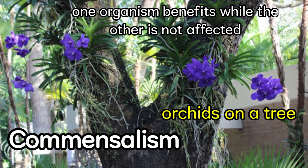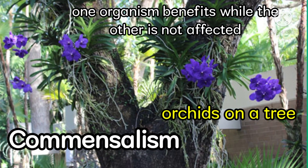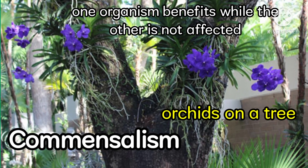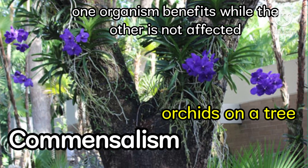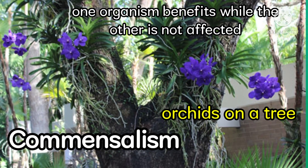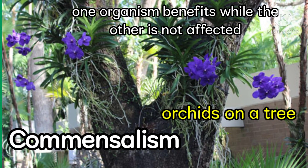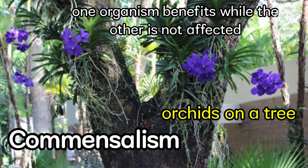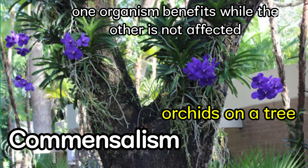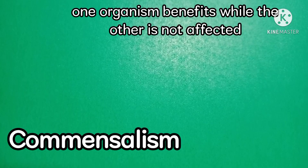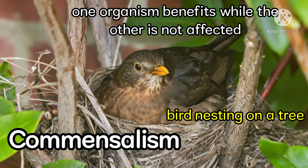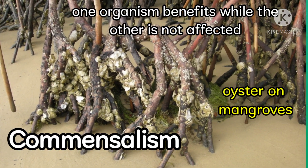Next is orchid on a tree. Orchids attach themselves to the trunk of trees. The orchids make their own food and do not take anything from the trees; they simply use the trees for exposure to get the much-needed sunlight. Another example is a bird nesting on a tree, and oysters on mangroves.